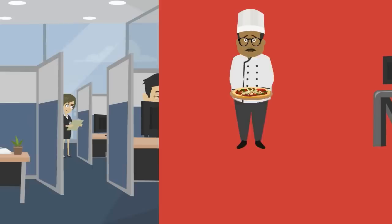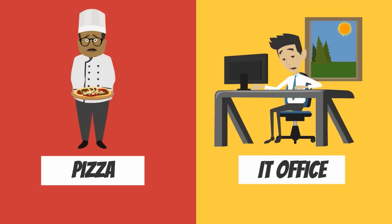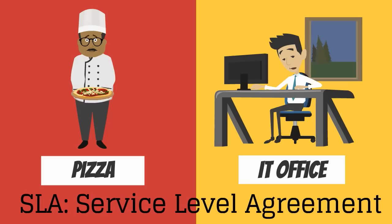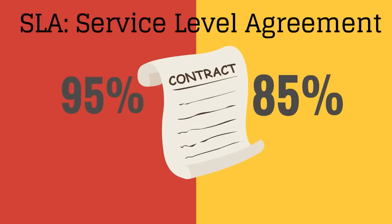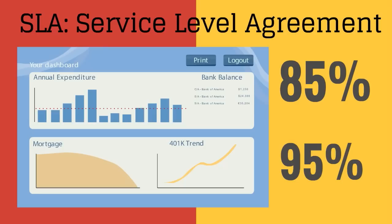In both the pizza and software installation examples, the content is focused on delivery timelines. Service levels are focused more on delivery timelines. SLA stands for Service Level Agreement — meaning there is a mutual understanding on the delivery timelines. In an IT industry, this agreement forms part of a contract signed between the customer and the service provider. Reports are published to monitor the achieved service levels against the agreed service levels in the contract.